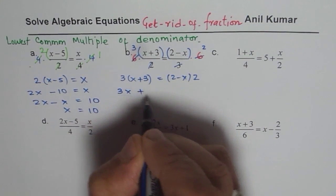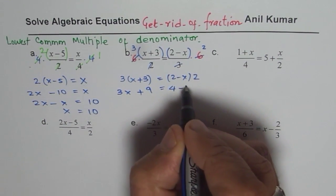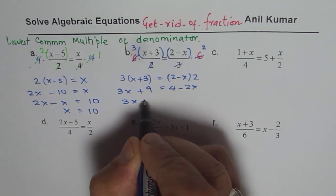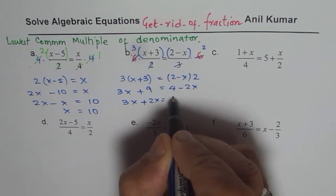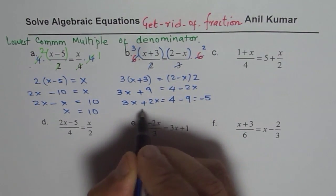Right? 4 minus 2x. Bring the x's together. 3x plus 2x equals to 4 minus 9, which is minus 5. And here we have 5x. Right? 3x plus 2x is 5x.